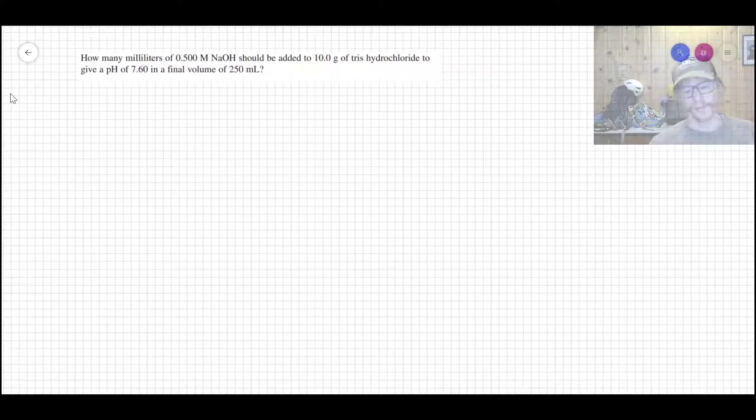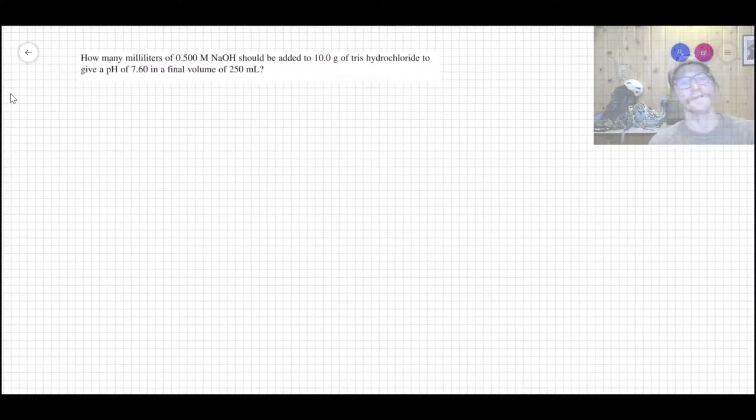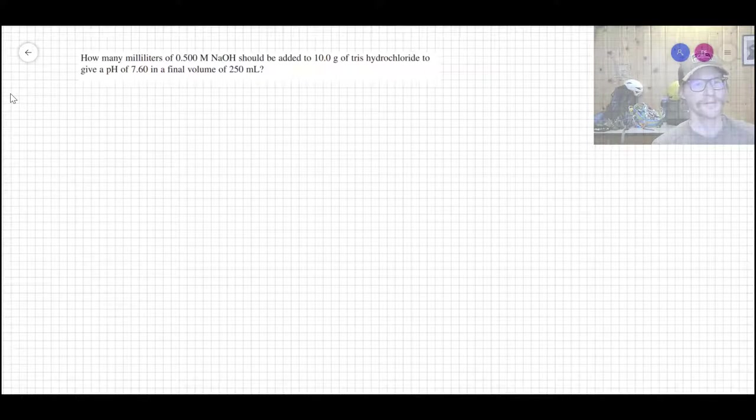Alright, I'm going to provide a third example here for making up a buffer solution and this one comes straight out of your book, chapter nine on monoprotic acid. The question asks how many milliliters of a 0.500 M sodium hydroxide solution should be added to 10 grams of Tris-HCl to give a pH of 7.6 with a final volume of 250 mL.